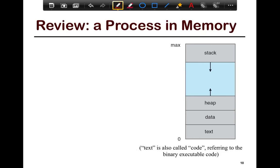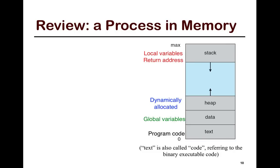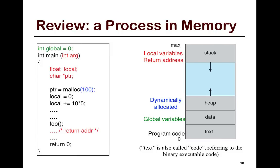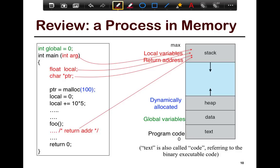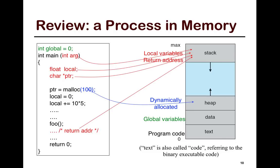A process in memory consists of local variables on the stack, your return address, dynamically allocated variables on the heap, global variables in the data segment, and program code in the text segment. In a simple C program, local variables, float locals, pointers, and return addresses all map to the stack. Dynamically allocated variables map to the heap. Global variables map to the data segment.